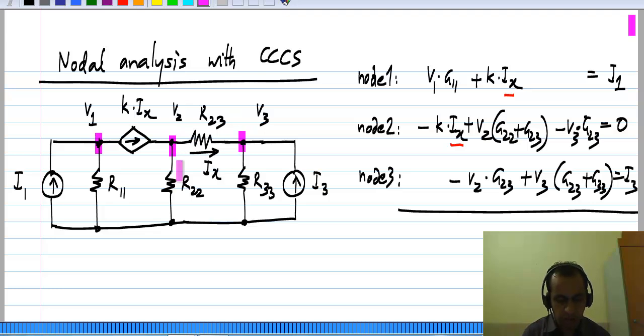This i_x is defined to be the current through this resistor. So it can be rewritten as i_x equals G_23, the conductance corresponding to R_23, times (V_2 - V_3).